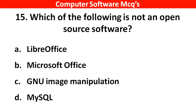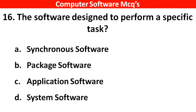Which of the following is not an open source software? Right answer is option B: Microsoft Office. Next question: The software designed to perform a specific task. Right answer is option C: Application software.